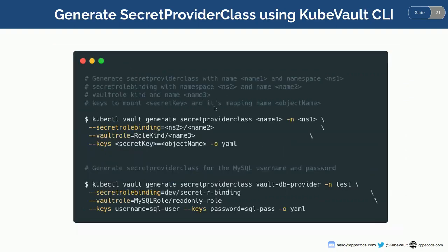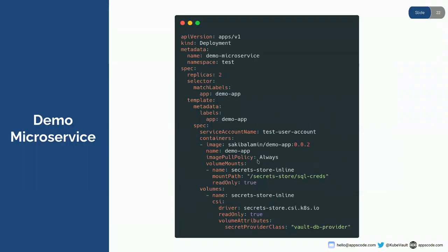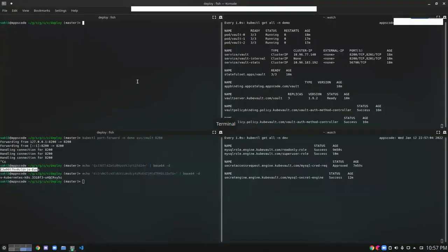You can see the command: you simply use 'kvault generate secret-provider-class', with the name, namespace, the secret role binding reference, the role you want to provide, the keys you want to mount, and an alias for the object name. For example, we can mount the username as 'sql-user' and the password as 'sql-pass.' Let's see how that can be done. Let's create a service account first. We have our service account. Now let's create a secret role binding.